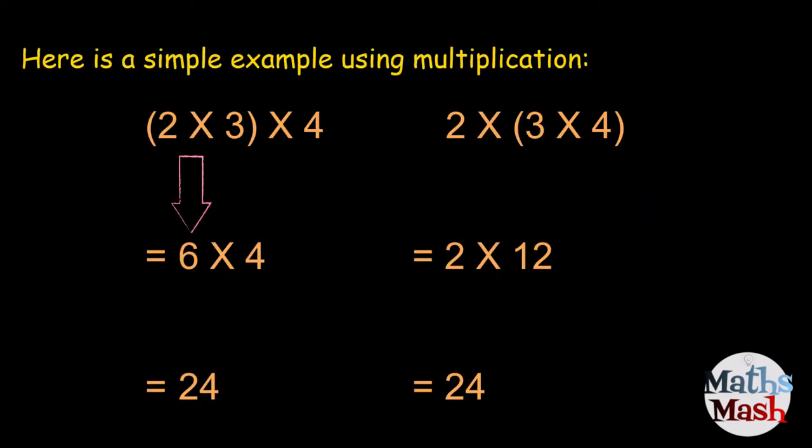Here's a simple example using multiplication. We have 2 times 3 in the brackets gives us 6. And we copy down the times 4. 6 times 4 will give us 24.